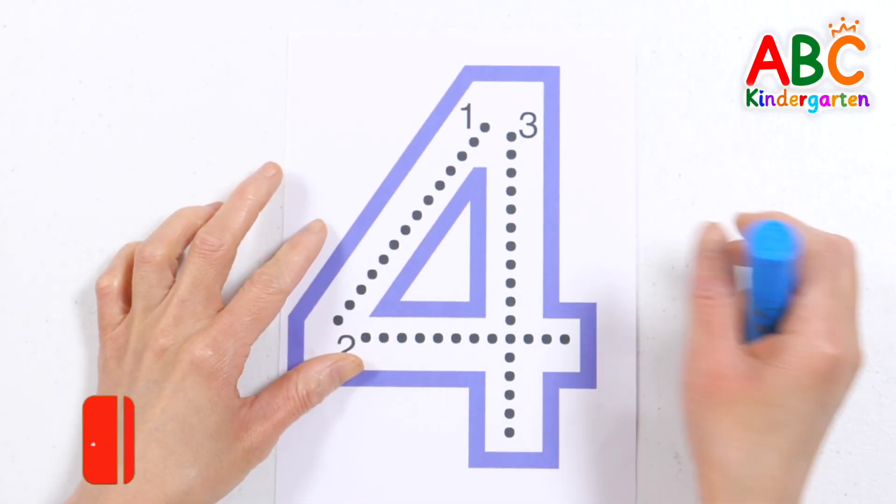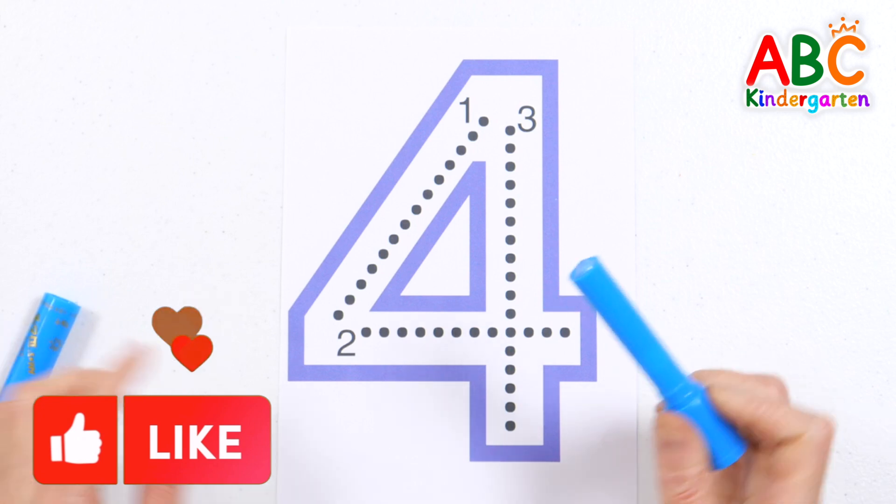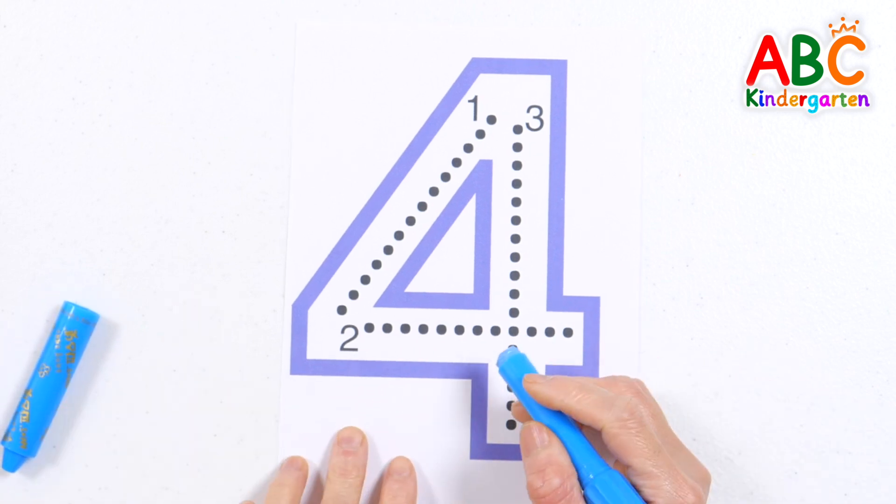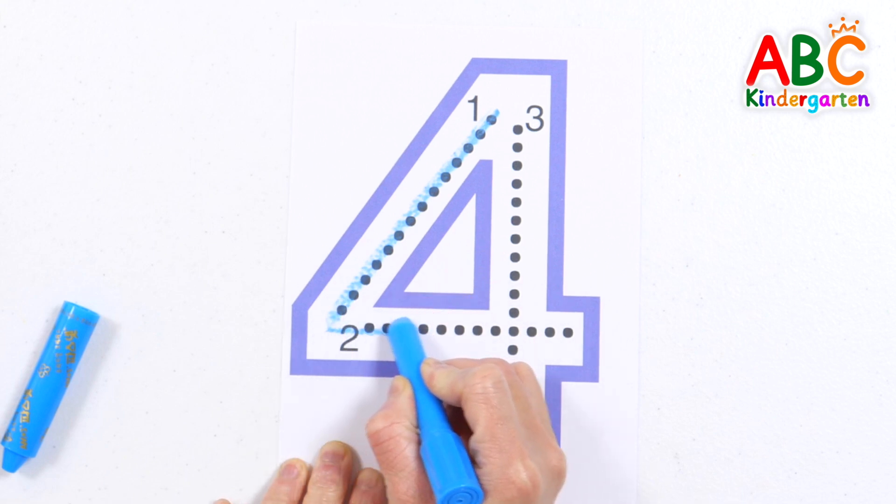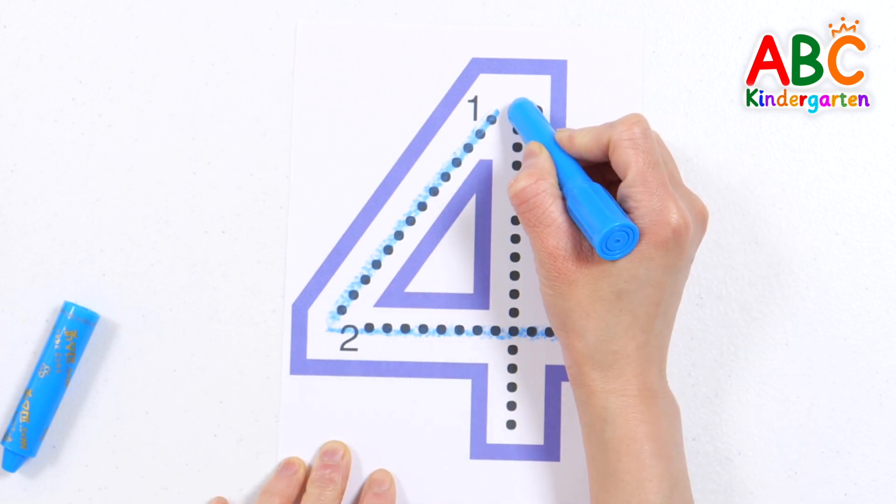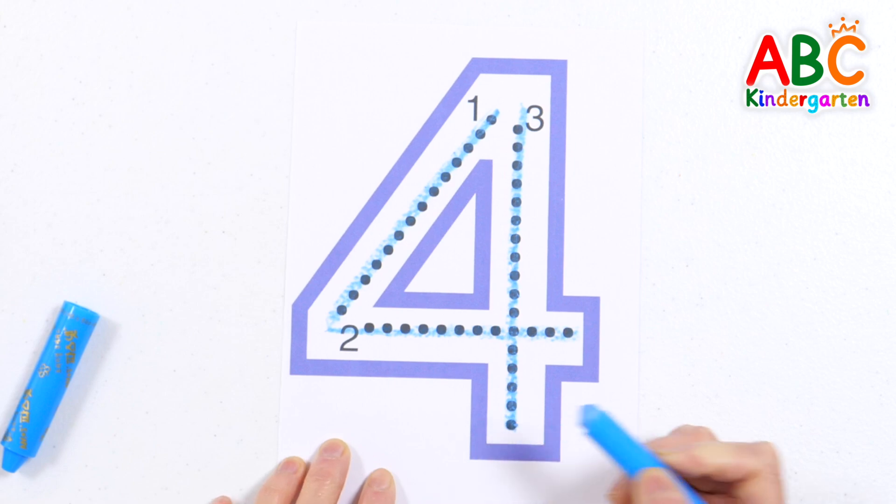Let's learn how to write the number 4 by following the dotted lines in numerical order. Done! 4!